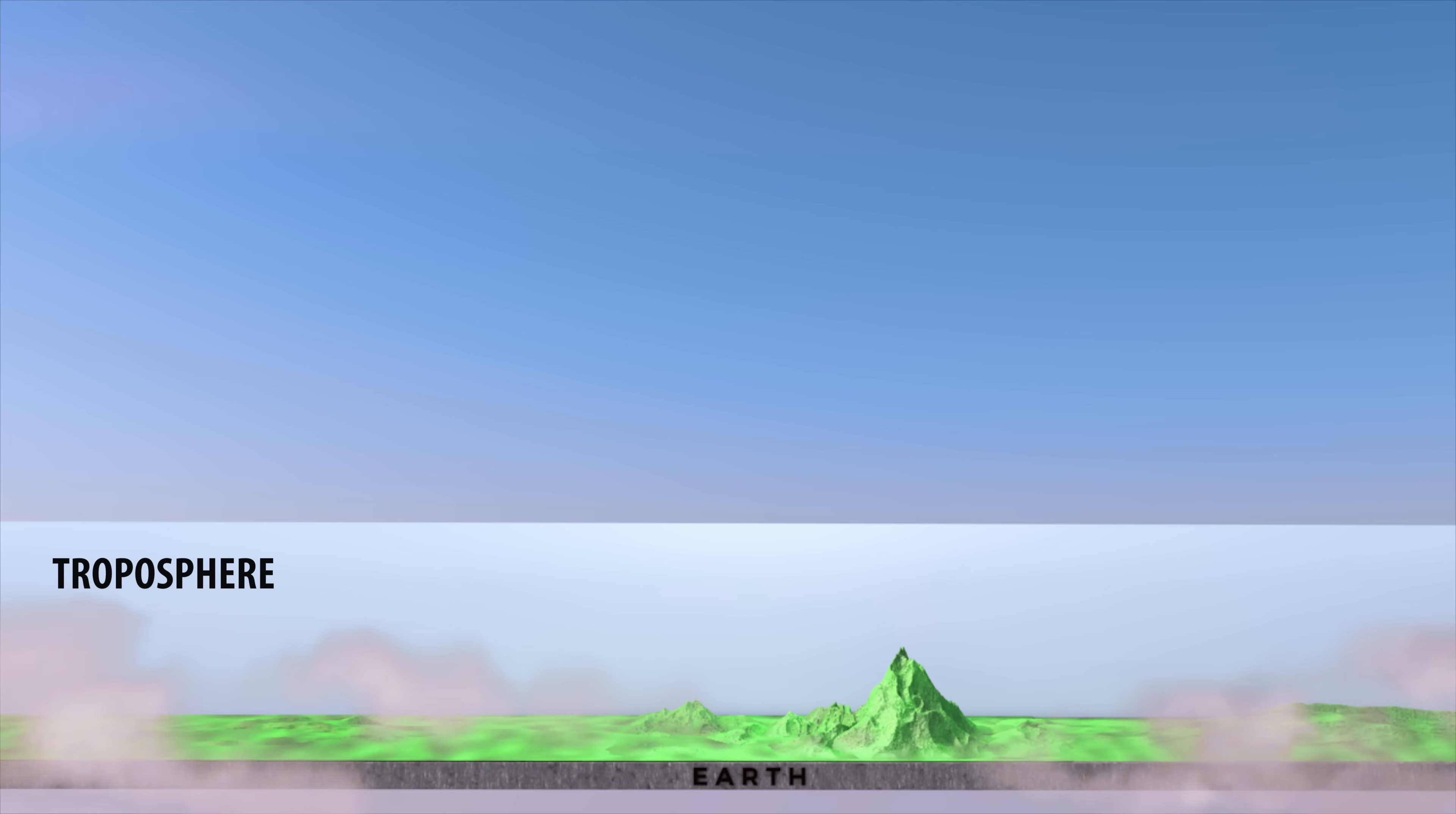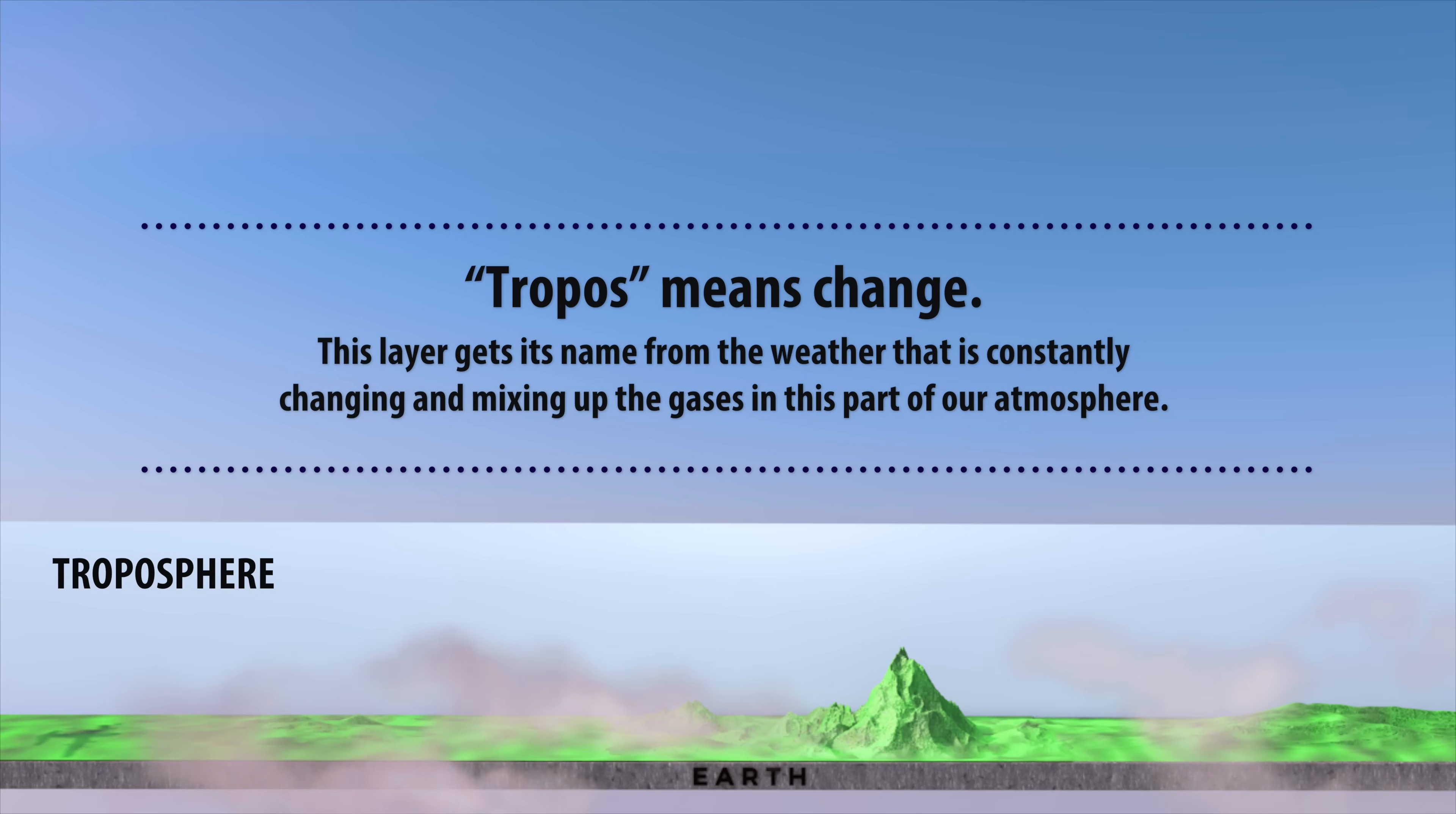The troposphere. Tropo means change. This layer gets its name from the weather that is constantly changing and mixing up the gases in this part of our atmosphere.